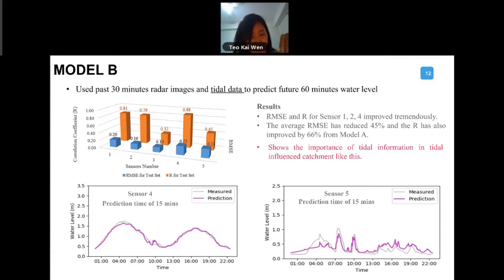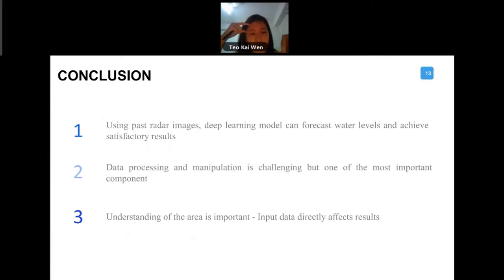So very quickly conclude. The conclusion here is that using past radar images, the deep learning models can actually forecast water levels and achieve satisfactory results. Here the challenge that I have was more on data processing and manipulation. It's very challenging but it is also one of the most important components that we should always emphasize on. Lastly, from the tidal information that I shared with you, understanding the area is actually very important. Sometimes there are some parameters that you miss out that would significantly affect your results. So that is all I have actually.